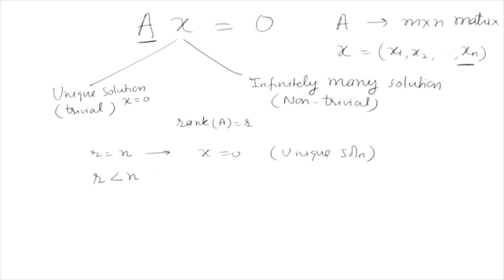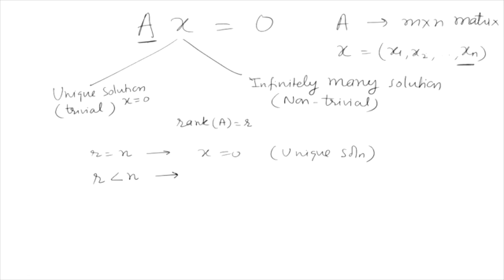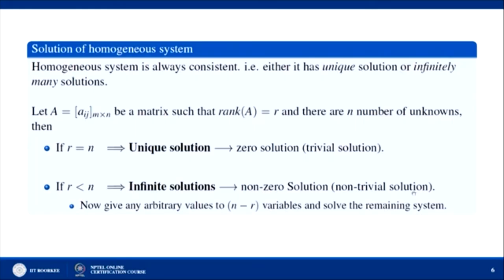If R is less than n, then the number of linearly independent equations is less than n, meaning there are more unknowns than independent equations, so the system has infinitely many (non-trivial) solutions. To find all solutions, you can assign arbitrary values to n minus R variables and then solve for the remaining R variables.